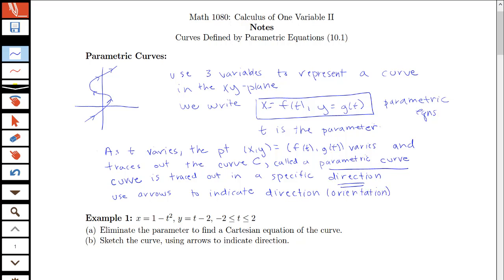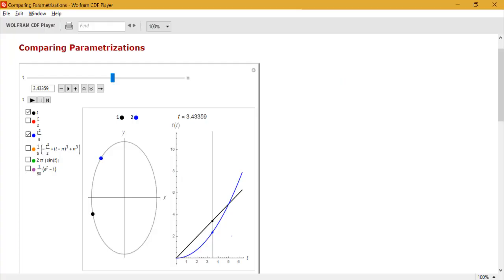Before we get to an example where we'll go through the process of sketching a parametric equation and also learning what it means to eliminate the parameter to go from the set of parametric equations to an equation with just x and y, we want to look at an example of what happens when we might compare two different parameterizations. Here I have the graph of an ellipse, but I can trace it out in a variety of different ways here.